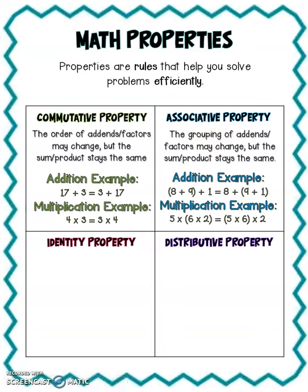So some examples of this would be like saying I could group the 8 plus the 9 first and then add 1, or I could group the 9 plus the 1 and then join that to the 8. Either way, my sum is going to be 18.